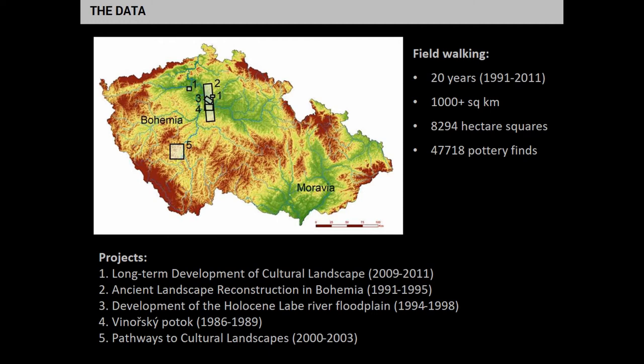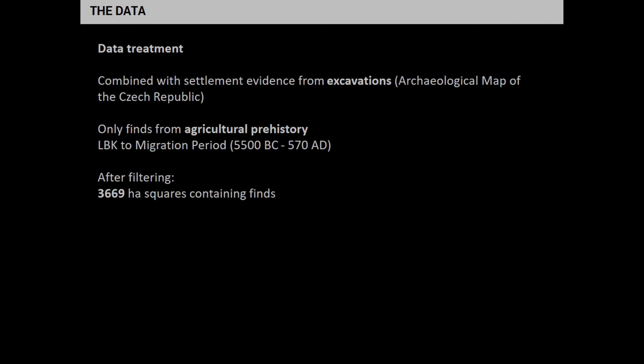We worked with data mostly from field walking which took place over a period of 20 years by the Archaeological Institute of the Czech Academy of Science, and covered more than 1,000 square kilometers. 8,294 hectare squares were walked and produced almost 50,000 pieces of pottery. This data was further filtered because we are only interested in the agricultural prehistory — from the linear pottery culture to the migration period — and we added data from excavations to enrich it. We were working with 3,669 hectare squares actually containing finds.